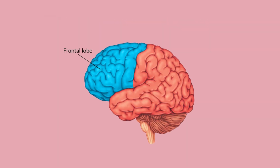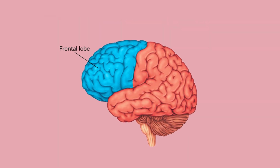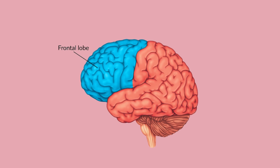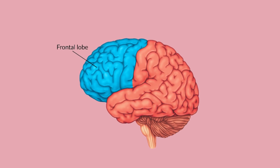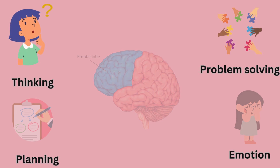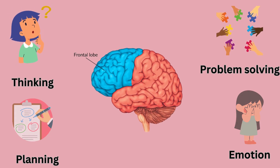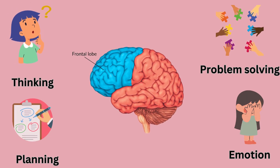First, the frontal lobe, located at the front of the brain. It's key for cognitive functions like thinking, planning, problem-solving, and emotions.